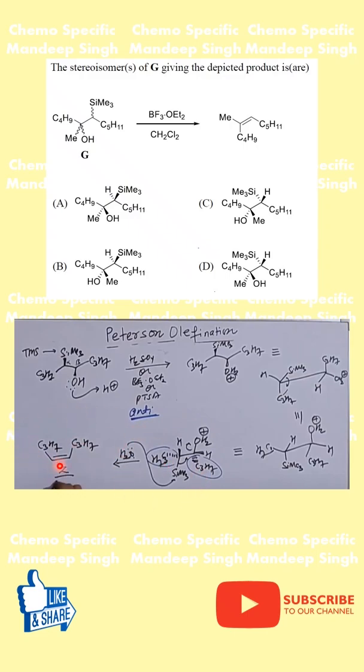And this is exactly the case here. So the two stereoisomers which will lead to the formation of a product are A and C. Because in both these cases, trimethylsilyl and OH are in the same direction. They are coming out of plane in the case of A and they are going behind the plane in the case of C.